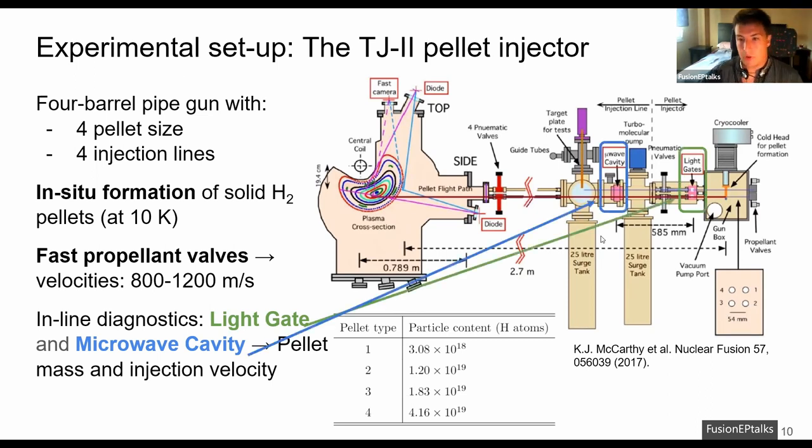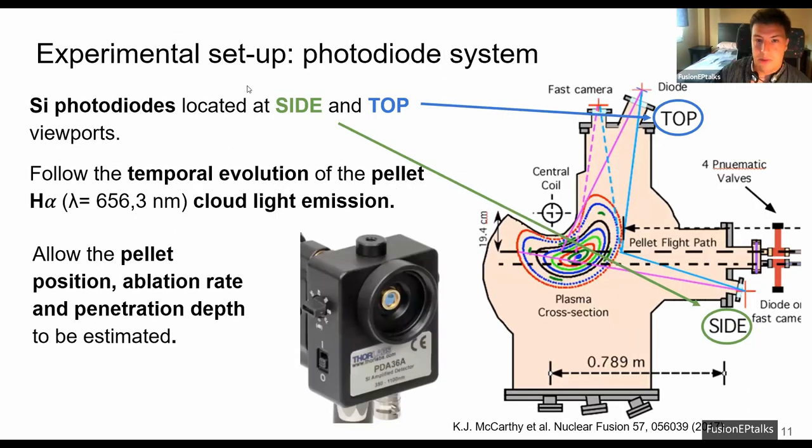In addition, it has two very important in-line diagnostics which are the light gate and the microwave cavity which allow to measure the pellet mass and the injection velocity. In addition, we have the TJ2 photodiode system where silicon photodiodes are located at the top and side viewports and they allow to follow the temporal evolution of the pellet H-alpha emission.